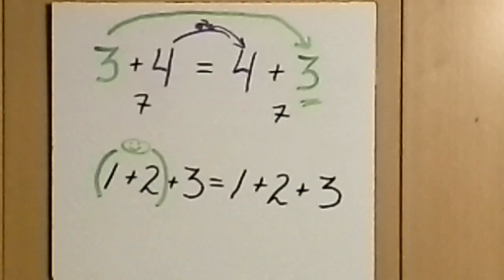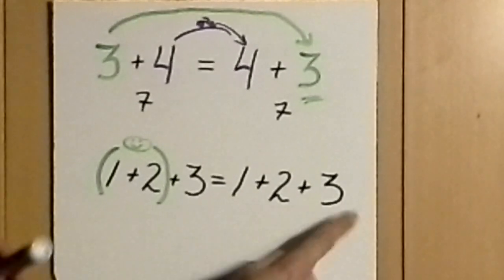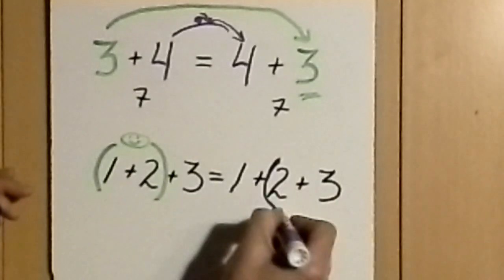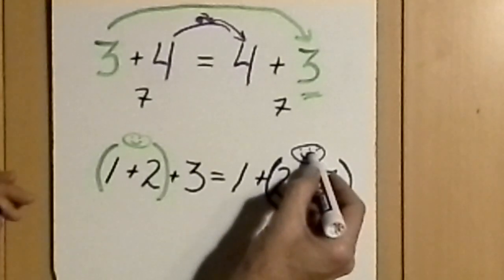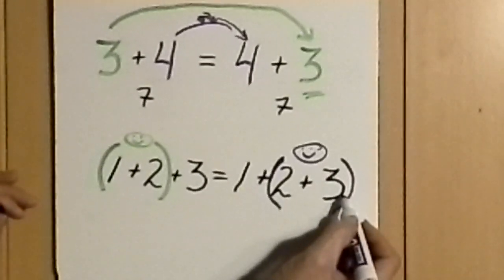And in the second case, we'll say that 2 plus 3 happen to be buddies, and today 2 will hang out with 3 first when they go to play. And so they are associating with each other.